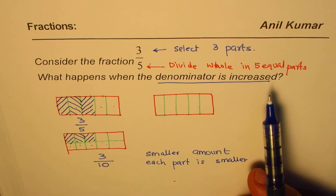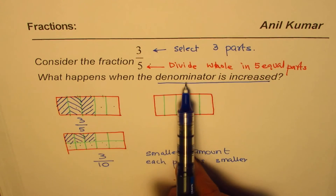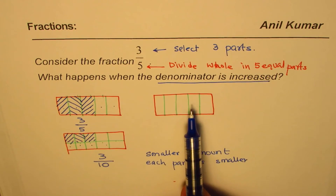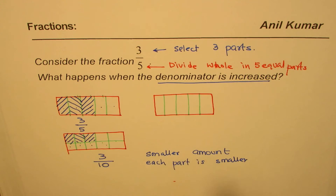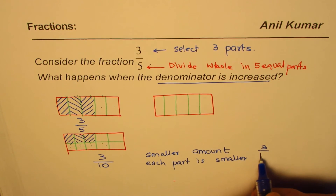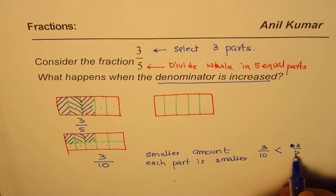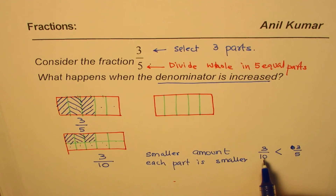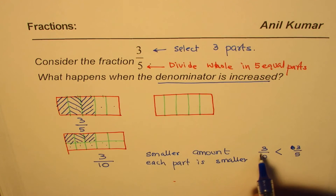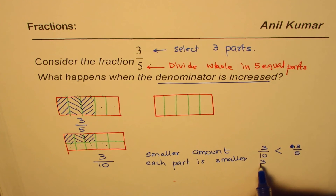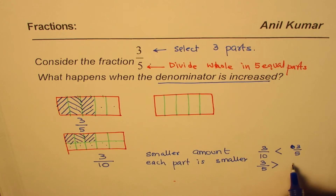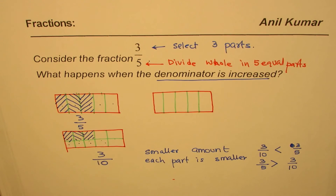So what happens when the denominator is increased? Clearly, you get a smaller number. You can write that 3 over 10 is less than 3 over 5, or equivalently, 3 over 5 is greater than 3 over 10. That is what happens when the denominator is increased.